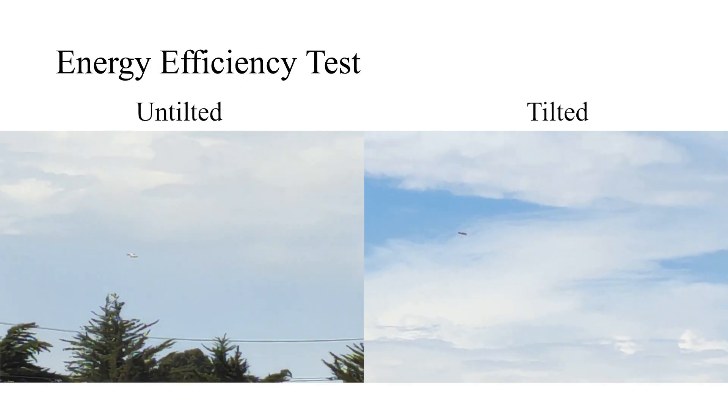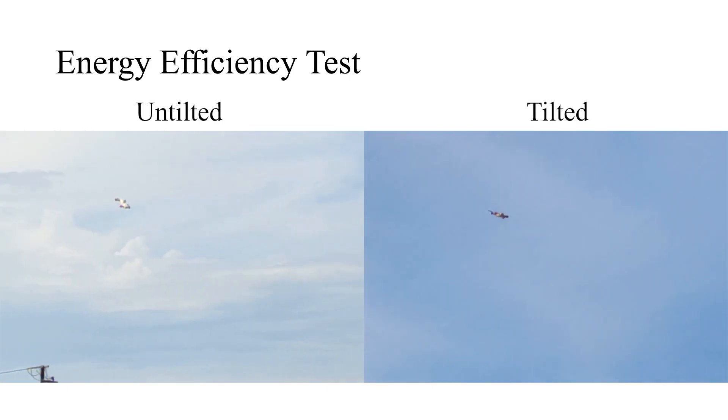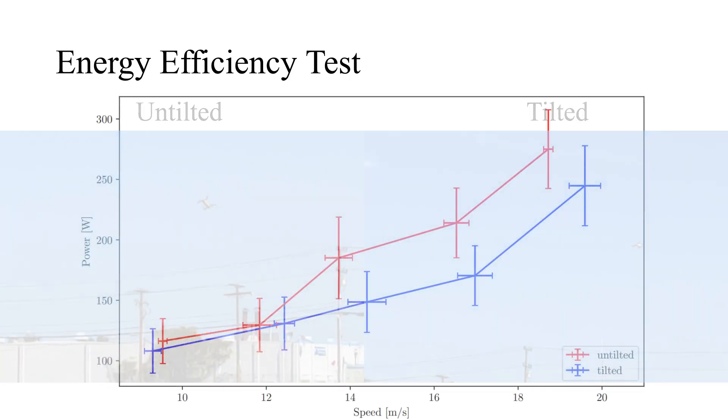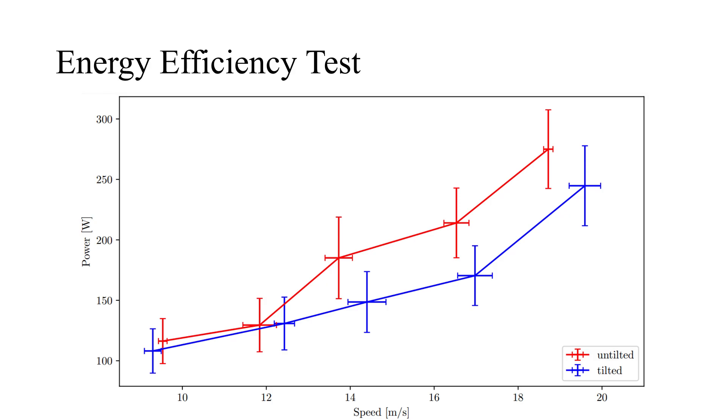Finally, we measured the energy efficiency of the vehicle by having it fly at a range of different speeds. We found that tilting reduces power consumption by more than 20% at higher speed ranges.